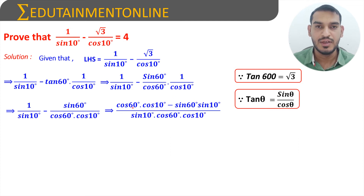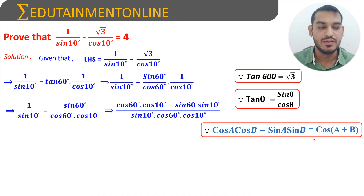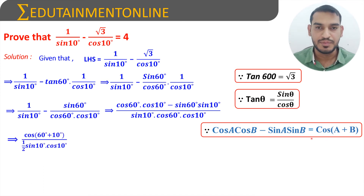The numerator is in the form of cos 60 degrees into cos 10 degrees minus sine 60 degrees into sine 10 degrees, which matches the formula cos A cos B minus sin A sin B — the expansion formula for cos(A + B).